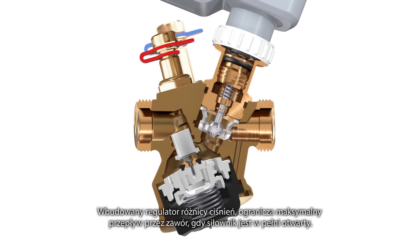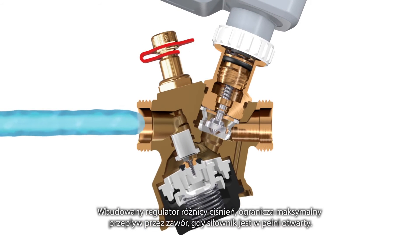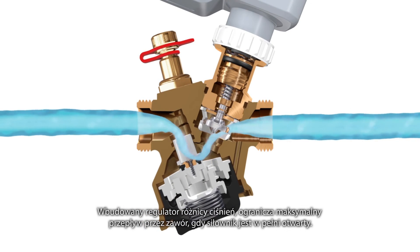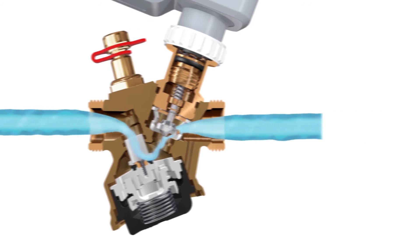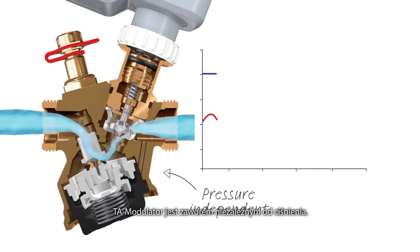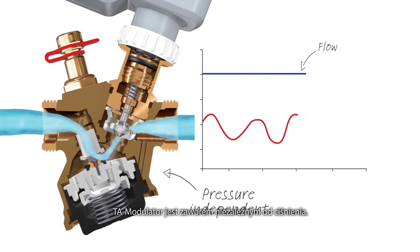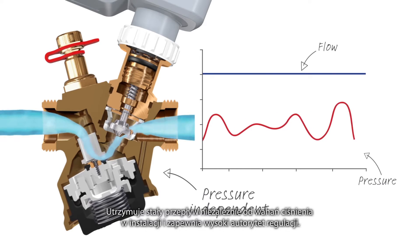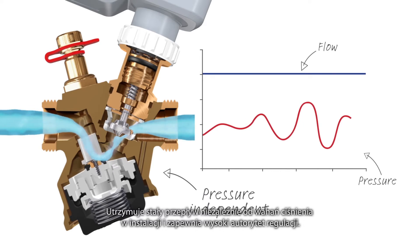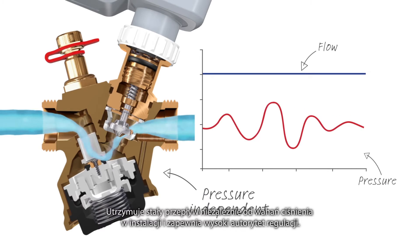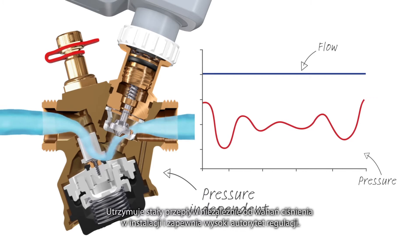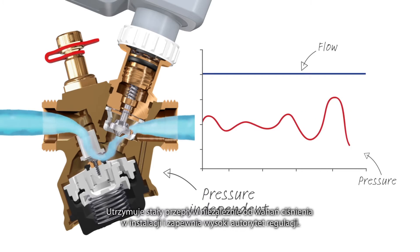The built-in pressure controller limits the maximal flow through the valve when the actuator is fully open. TA Modulator is a pressure-independent valve — it keeps the flow constant regardless of pressure fluctuations in the system and guarantees high control authority.